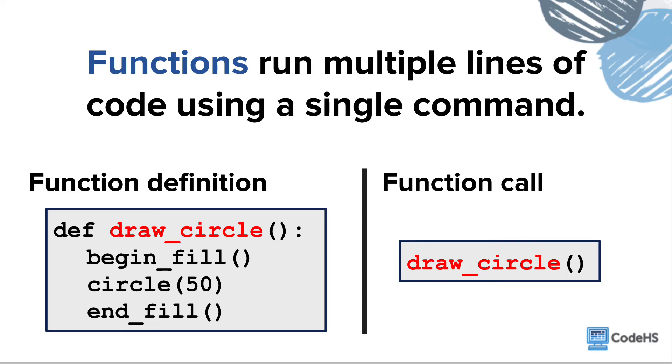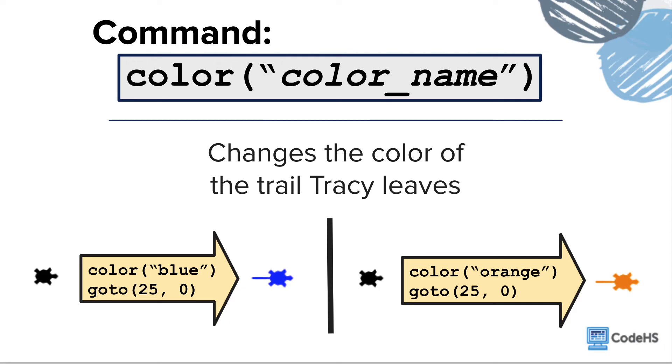Let's learn one more command before we help Tracy with her corndog. To bring some color into Tracy's world, we use the color command. Simply type the word color, and then a color name in quotation marks inside parentheses.